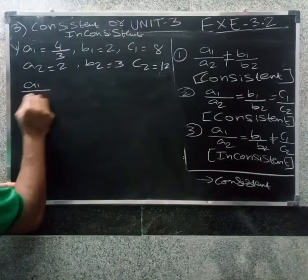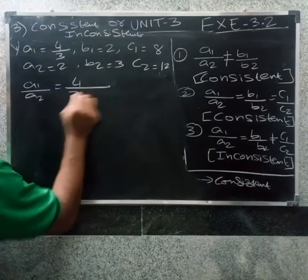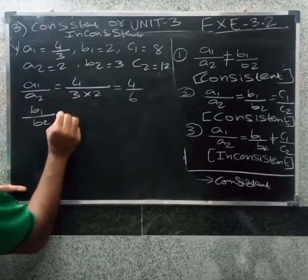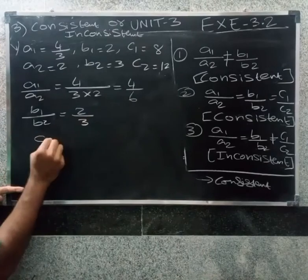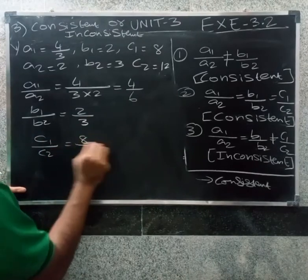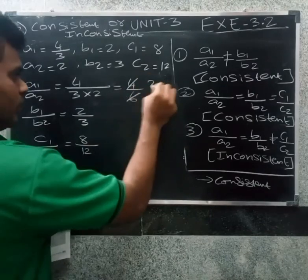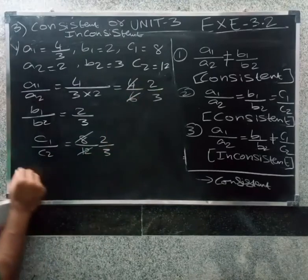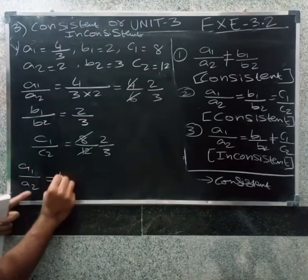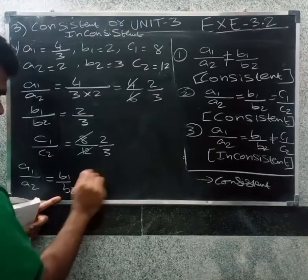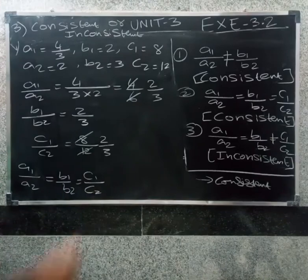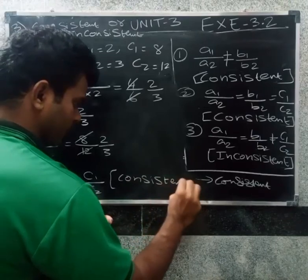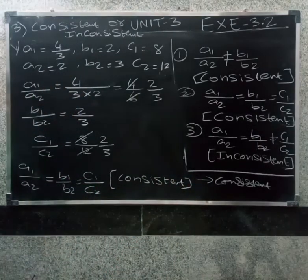For the next problem, a2 equal to 4 by 3 into 2 equal to 4 by 6, b1 by b2 equal to 2 by 3. So a1 by a2 equal to b1 by b2 equal to c1 by c2, all three are equal, that is consistent. Thank you.